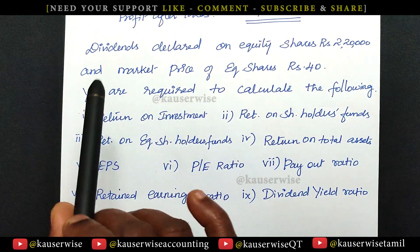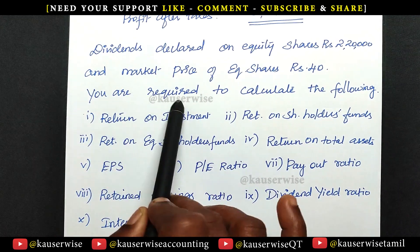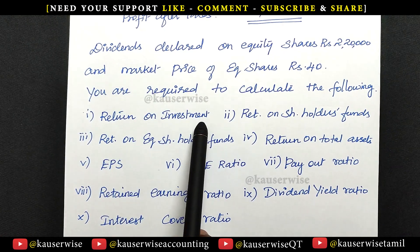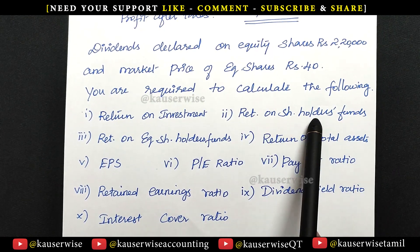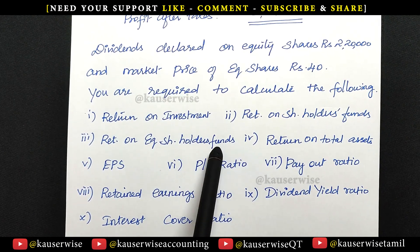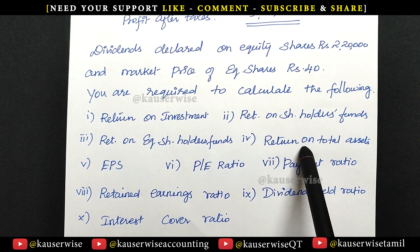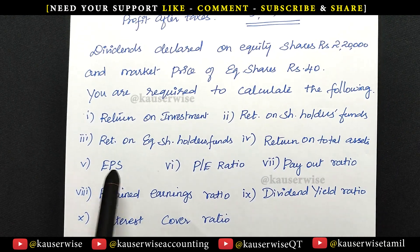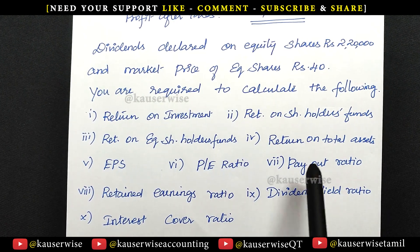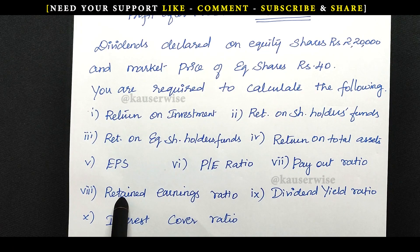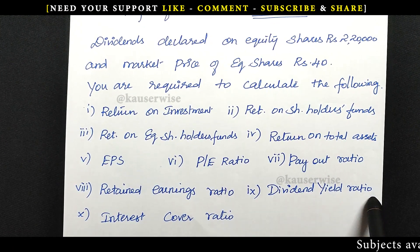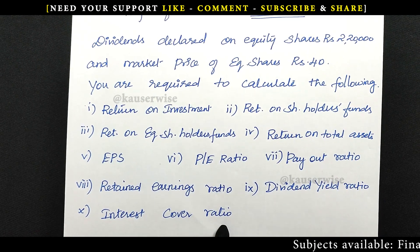With this information, you are required to calculate the following: number 1, return on investment; number 2, return on shareholders funds; number 3, return on equity shareholders funds; return on total assets; earning per share; price earning ratio; payout ratio; retained earnings ratio; dividend yield ratio; and finally interest cover ratios.